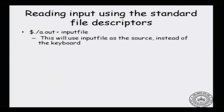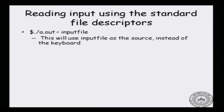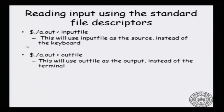How do you read input using standard file descriptors but from sources other than the keyboard? For example, if you are running ./a.out and you want to take the input not from the keyboard but from an input file, you can say: ./a.out < inputfile. This says that the input is coming from the file inputfile — it is used as the source instead of the keyboard. Similarly, if you want to redirect the output to a particular output file instead of the screen, you can say: ./a.out > outfile. This will use outfile as the output instead of the terminal.